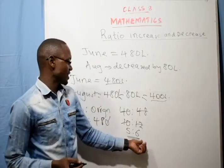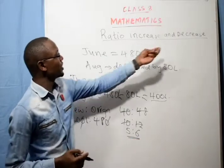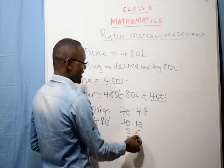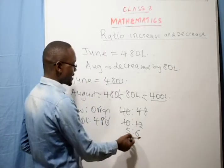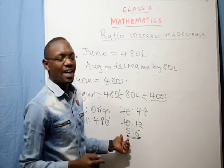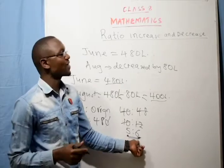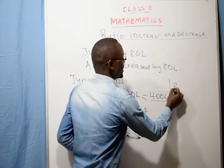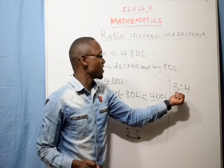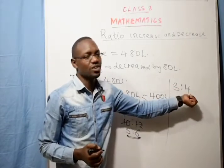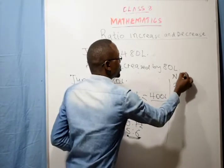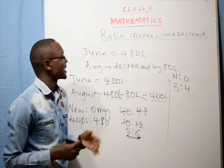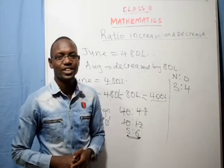You realize that in a ratio decrease, the first quantity is smaller than the second quantity, because the value has decreased — it was at 6 but has decreased to 5. So if the first value is smaller than the second value, that is a decreasing ratio. For example, 3 is to 4 is a decreasing ratio. That is all about ratio increase and ratio decrease. Thank you.